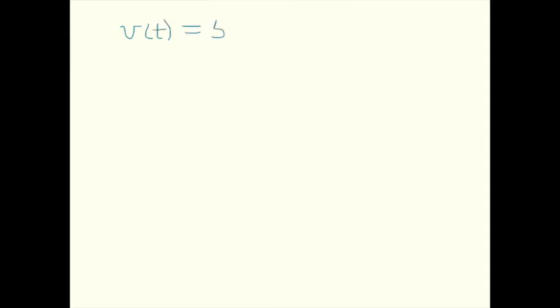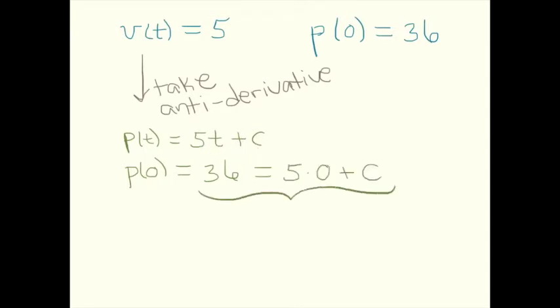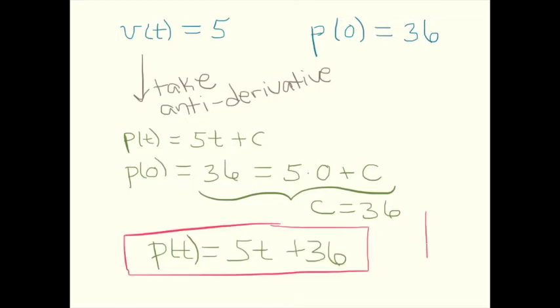Now let's suppose I'm given a bit more information. Not only do I have velocity equals 5, but I know that at time 0, the position is 36. Taking the antiderivative gives 5t plus C. If I know that the initial position is equal to 36, then plugging t equals 0 into this function, I better get 36. Combining this information tells me C is equal to 36. Only one particular C value will work, and specifying initial position always amounts to specifying a C value. The graph is now just a single straight line with slope 5 and y-intercept 36.